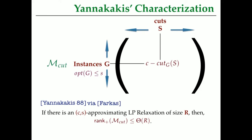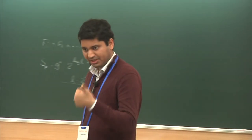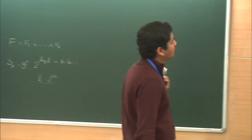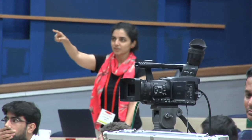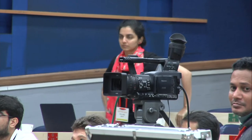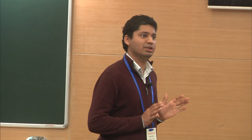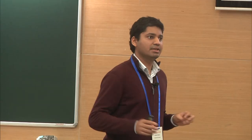Each entry is indexed by a graph g and a cut S. The g comma S-th entry is c minus the value — the number of edges in the cut S in the graph g. By the description of the matrix, it should be clear that this matrix is non-negative: the optimum value of g is at most s, c is bigger than or equal to s, so c minus cut_g(S) is always positive. I'm going to call this matrix M-cut.